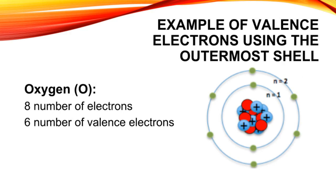Example of valence electrons using the outermost shell. As you can see in this picture, oxygen has eight electrons, while the valence electrons is six, because the outermost shell of oxygen has six electrons.